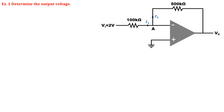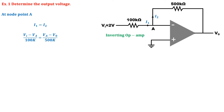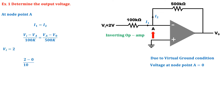Exercise number 1: Determine the output voltage. The input voltage in the given operational amplifier is applied to the inverting terminal, so it will be called an inverting operational amplifier. I1 current at node point A equals I2. Assuming the voltage at node point A is Va, the value of I1 is Vi minus Va upon 100 kΩ, and the value of I2 is Va minus Vo upon 500 kΩ. Since Vi is 2 V and the non-inverting terminal is grounded, Va is 0 from virtual ground. Solving this gives the output voltage as –10 V.